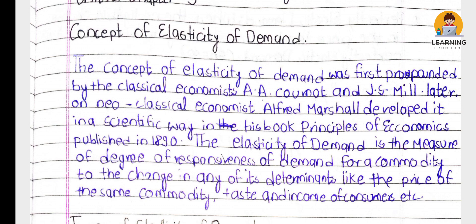The concept of elasticity of demand was developed by classical economists A.A. Cournot and J.S. Mill. Elasticity of demand is the measure of degree of responsiveness of demand for a commodity to change in any of its determinants, like the price of the same commodity, taste and income of the consumer, etc. Elasticity of demand refers to the change in the quantity demanded of the commodity due to the change in any of its determinants.